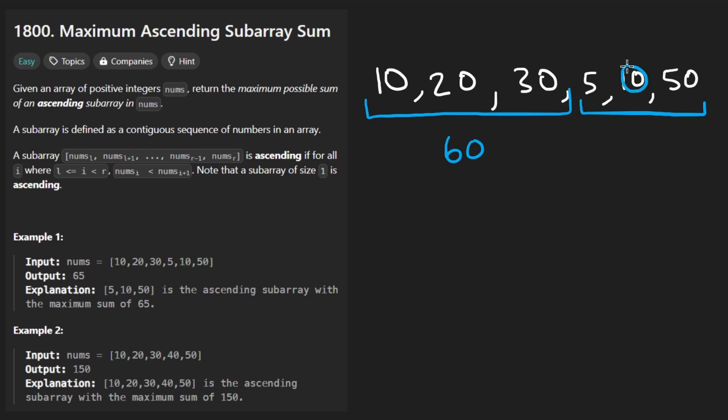Or maybe you could look at this subarray over here, which is going to be 5 plus 10 plus 50, that's going to be 65. So this is bigger than this one. And if you look at the output for this example, 65 is the result, that is actually the subarray that we want to identify.